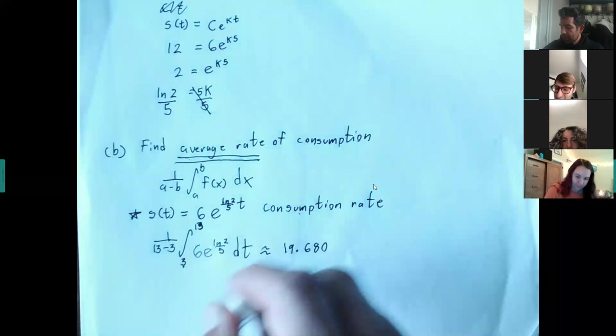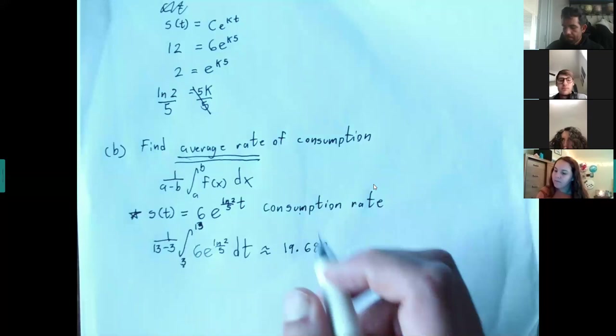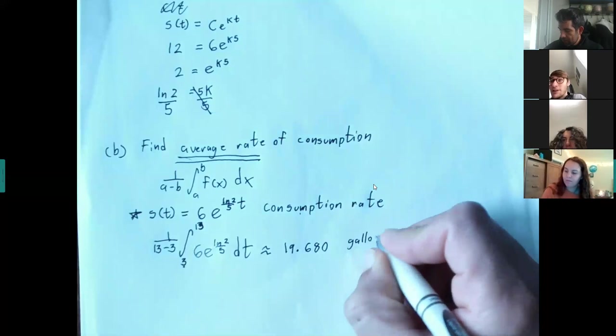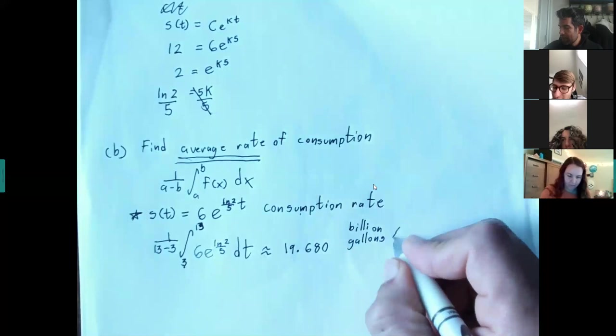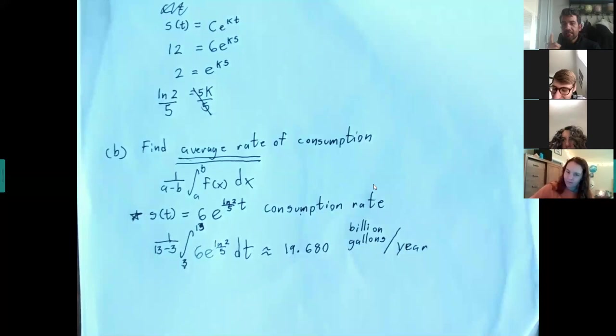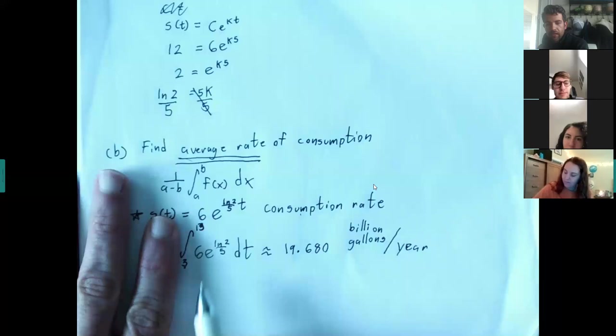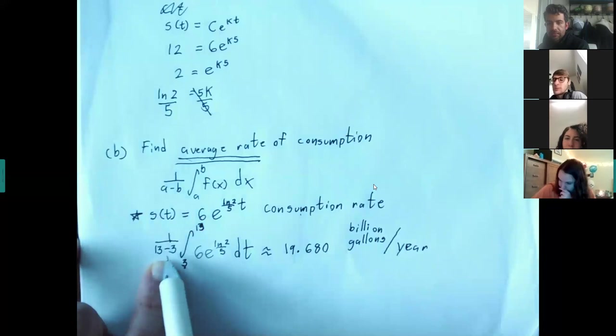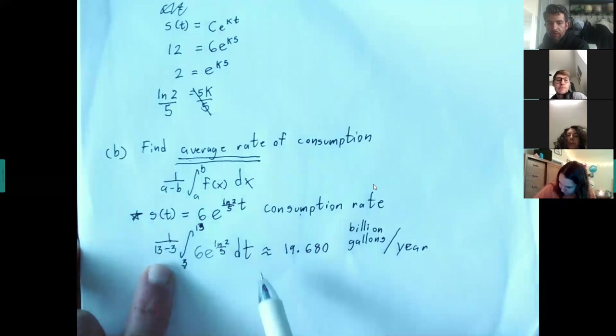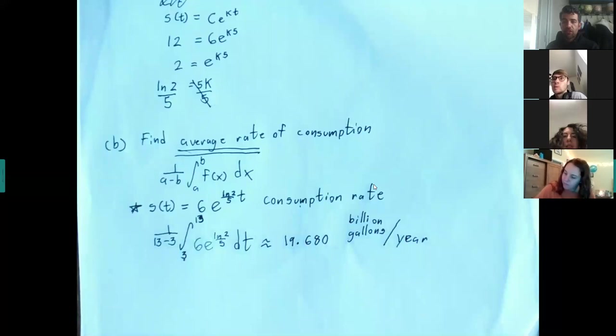What are the units? It's billions of gallons. Notice that if I would have just taken the integral, that would have given me just billions of gallons. But because I divided by time — one over (13 minus 3) — this is the time denominator. So integrating gives gallons, then dividing by time gives billions of gallons per year. It's kind of interesting: you integrate and then divide again.